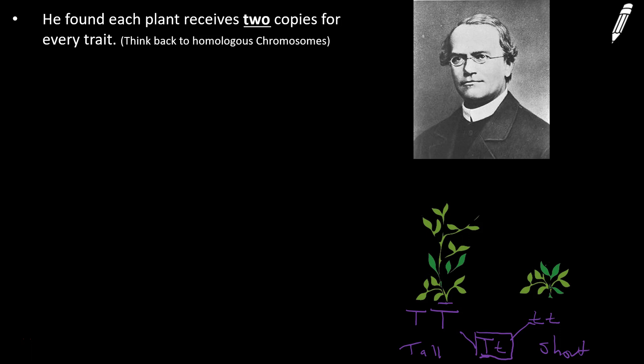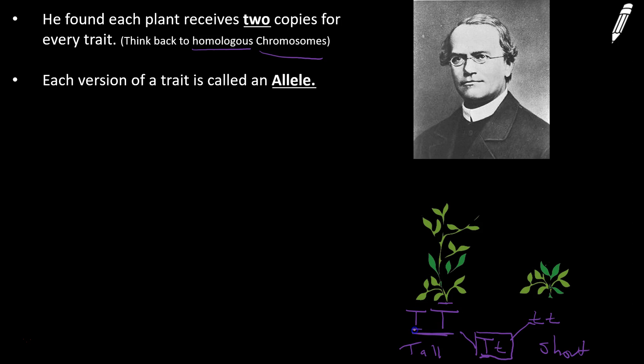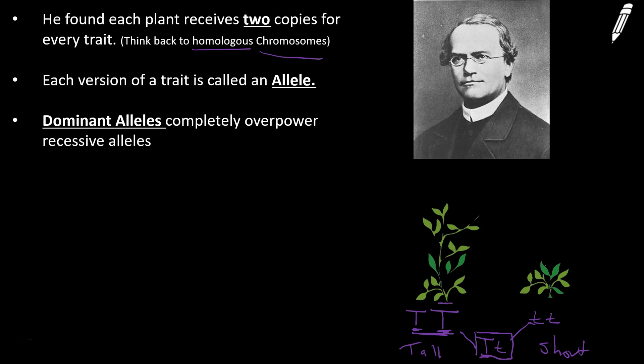Here are the notes to take. Number one: he found that each plant receives two copies for every trait. Think back to homologous chromosomes — how many chromosomes did we inherit from each parent? We inherited two. Now, at this time there was no concept or knowledge of DNA and chromosomes, so this is all before DNA was discovered. Each version of a gene he called an allele — so this would be one allele and this would be the second allele inherited from each parent.